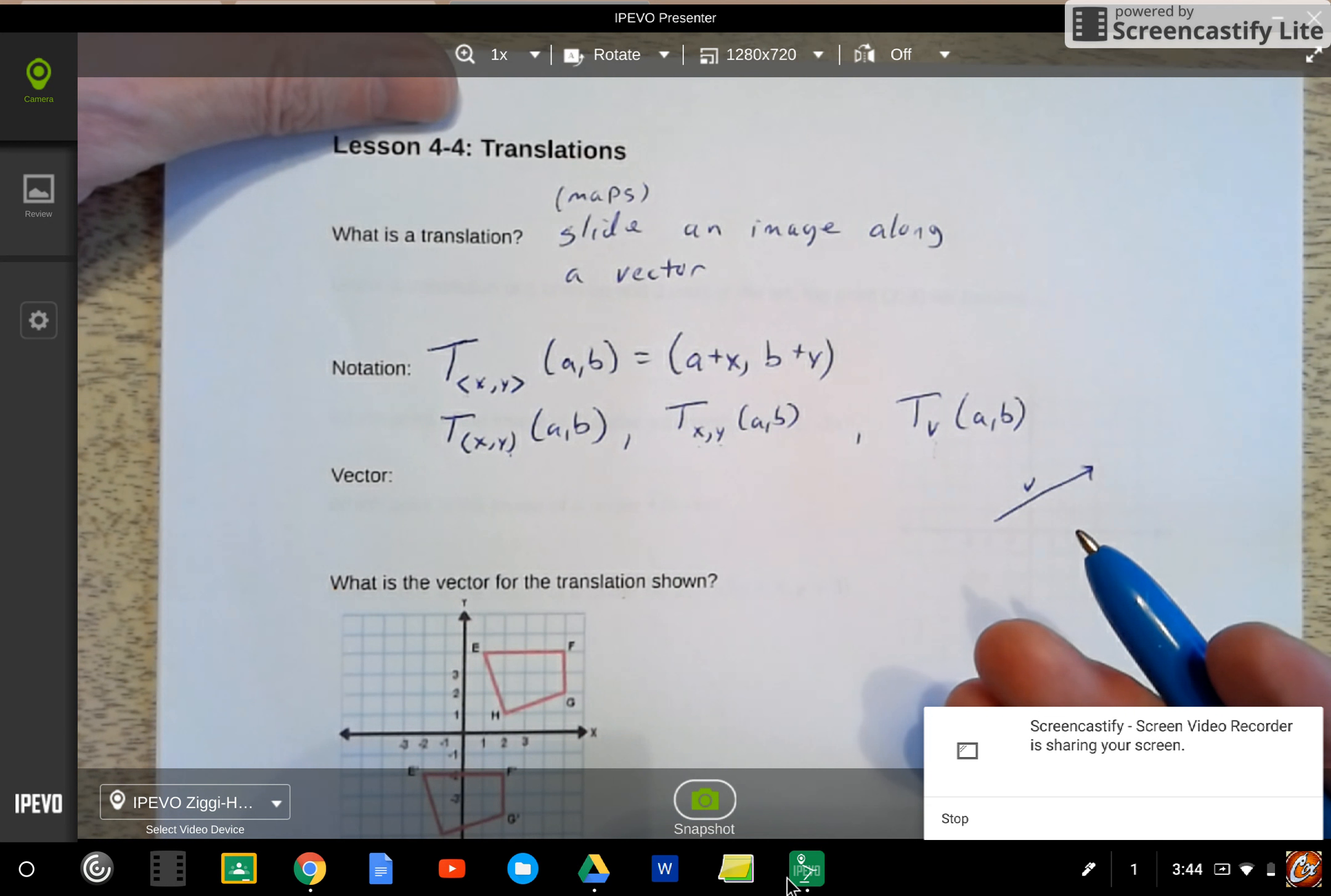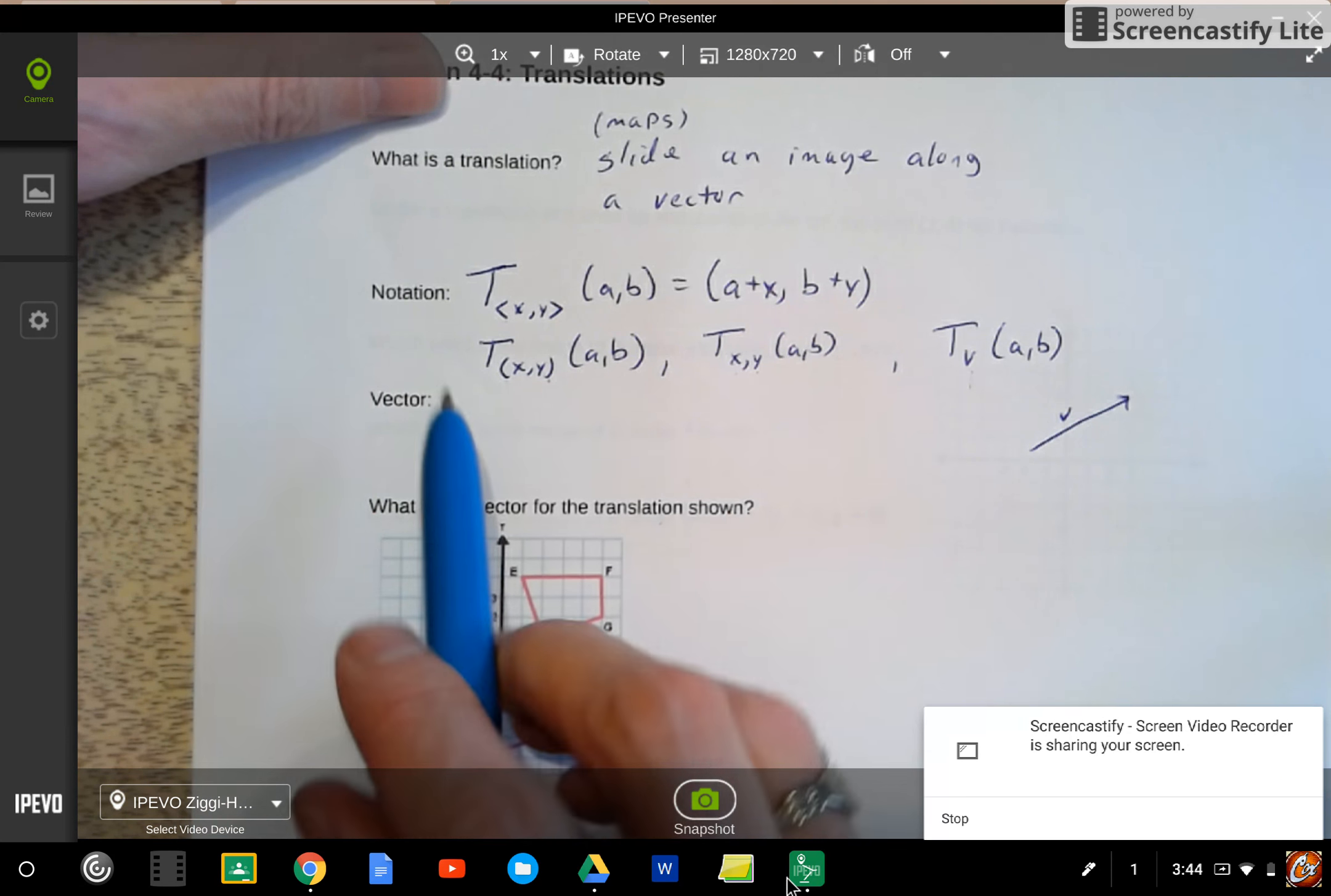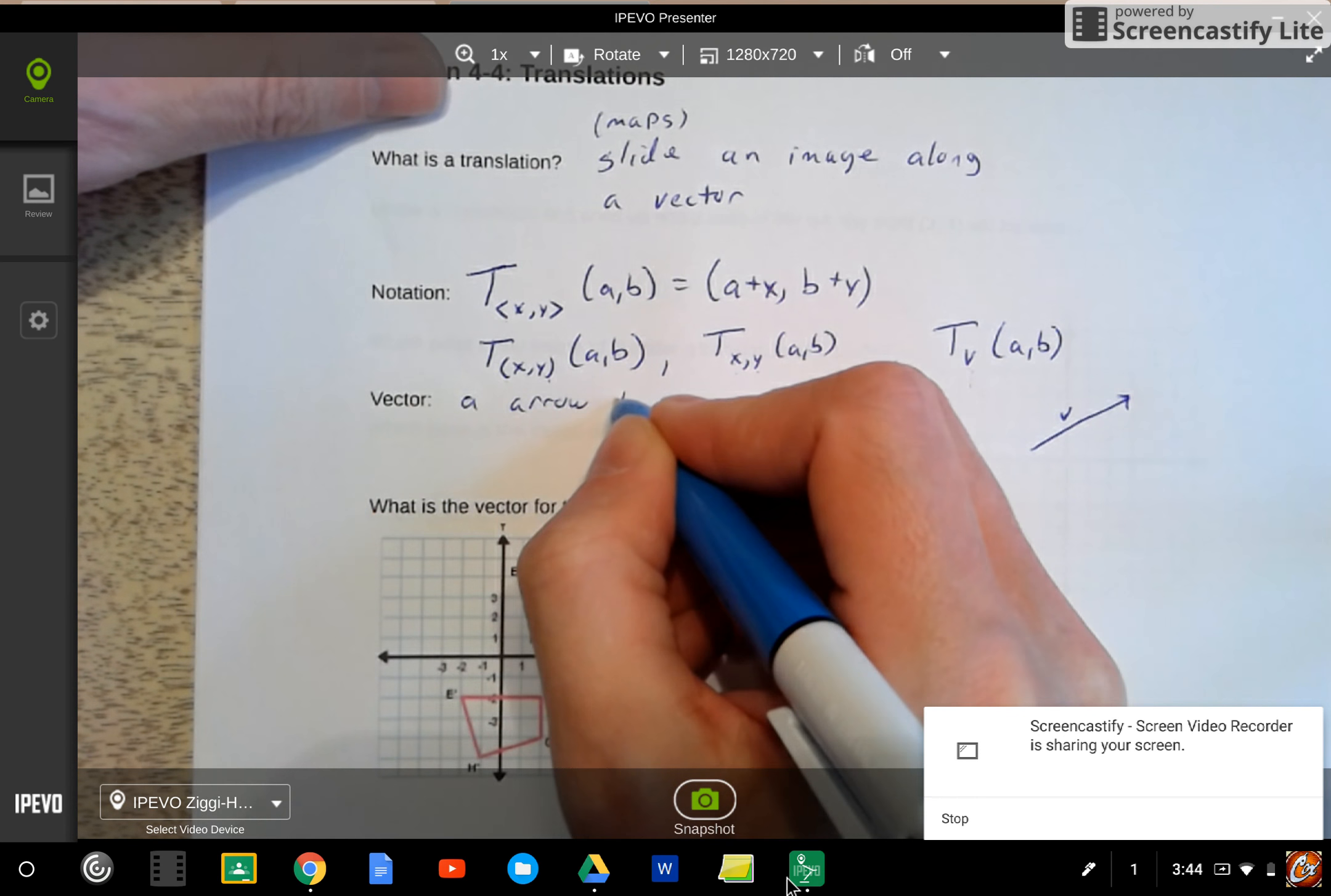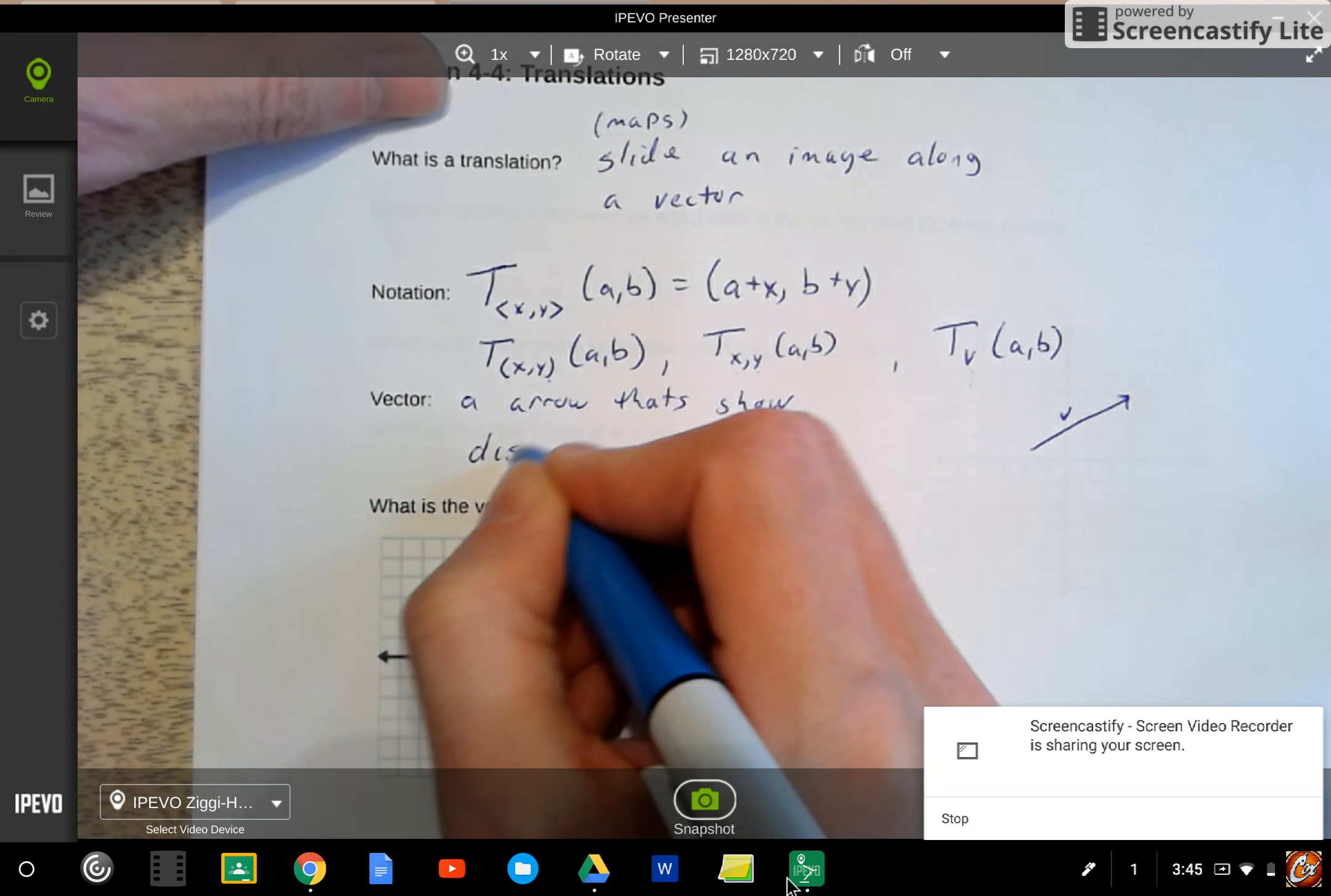I keep using this word vector. What is it? Well, it's maybe a term you've heard from your science classes. A vector is an arrow, basically, that shows distance and direction.